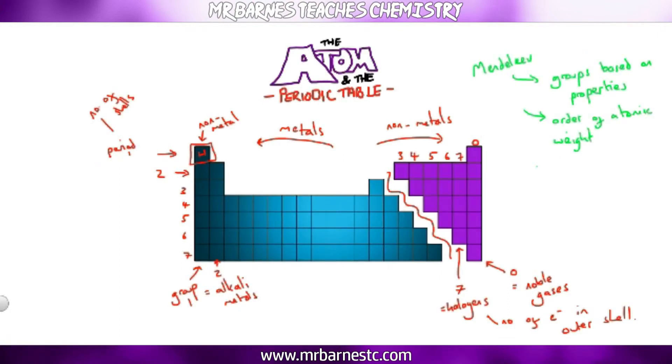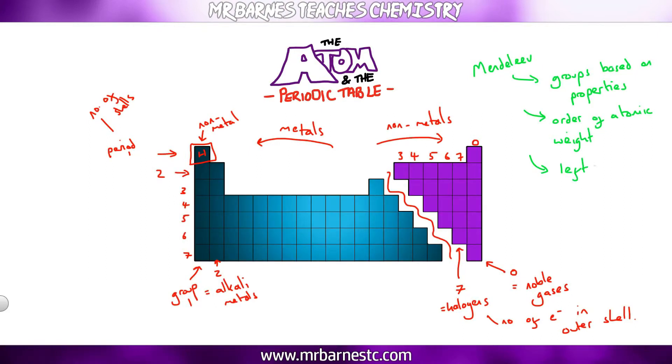Now this wasn't always the case and sometimes he needed to swap them around if they didn't actually fit the pattern. And if there was something that didn't match at all he would leave gaps. The reason he did that is because there were undiscovered elements, ones that hadn't been found yet.